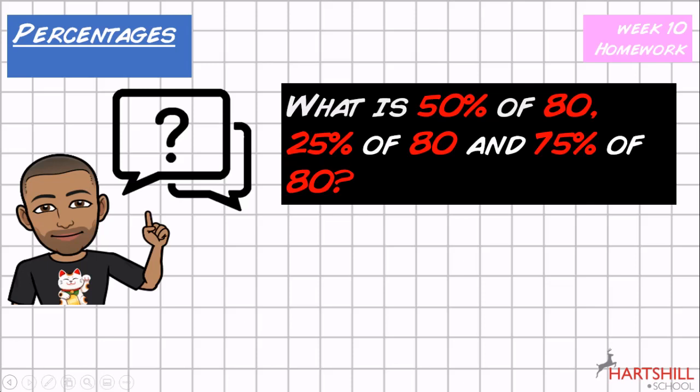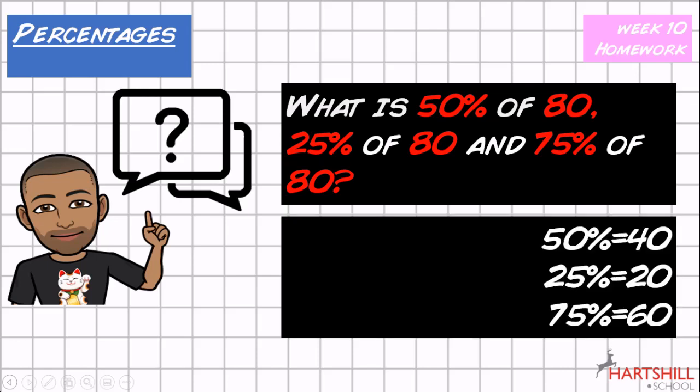So the answers are, well, 50% is 40, you can work that out, that's just half of 80. 25% would then be half of this 40 value, and then 75%, well, if you just add 50% and 25% together, you get 75%, so 40 and 20 must be 60.